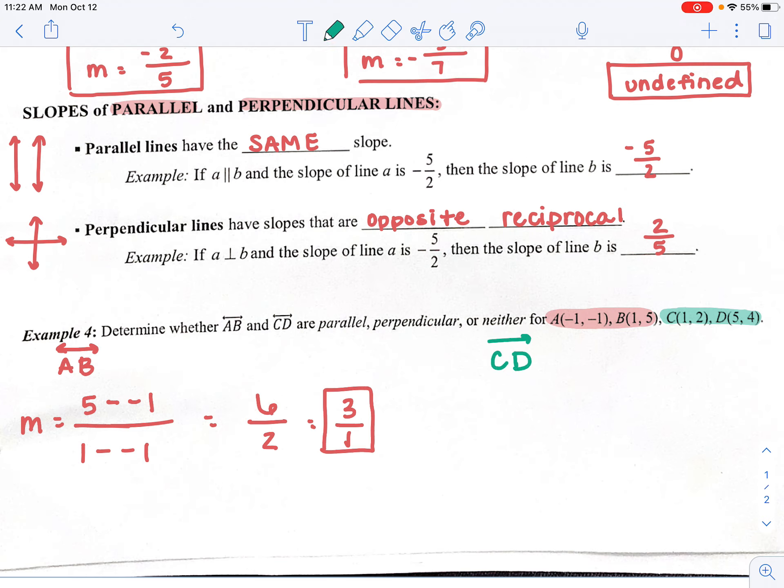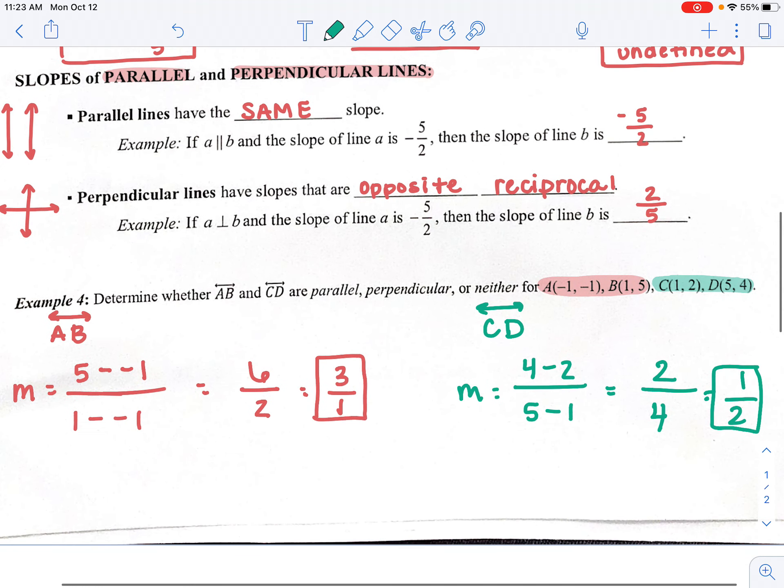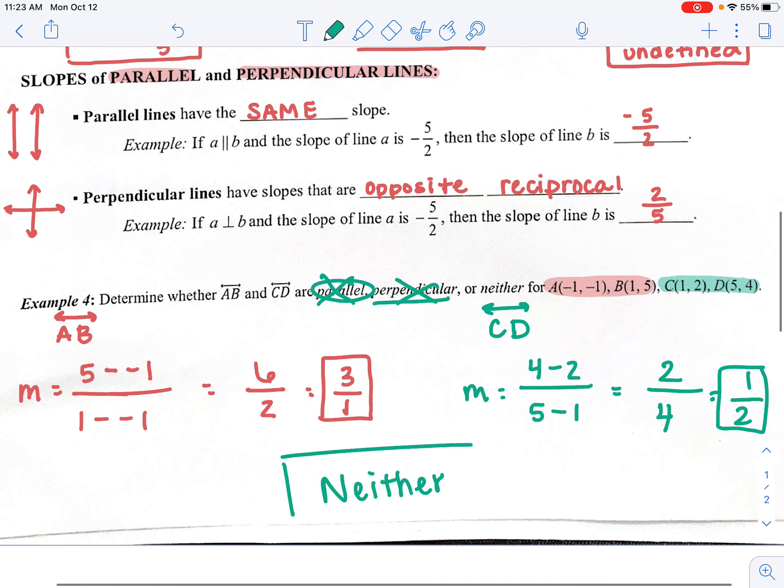For C and D, we're going to find this slope now. Line CD. We do y2 minus y1 over x2 minus x1. So I've got 4 minus 2 divided by 5 minus 1. 4 minus 2 is 2. 5 minus 1 is 4. 2 over 4 simplifies down to 1 half. So looking at those slopes, if they were to be parallel, they'd have to be the same. Is 3 over 1 the same as 1 half? No. So they're not parallel. If they were perpendicular, they'd have to be the opposite reciprocal of each other. And they're not. So that means our answer is just going to be neither. They're neither parallel or perpendicular.